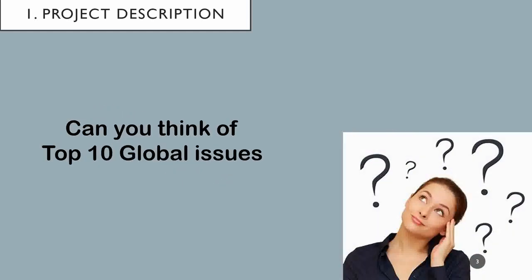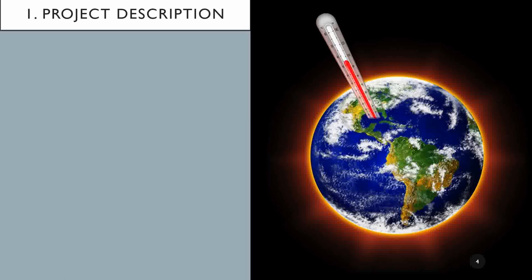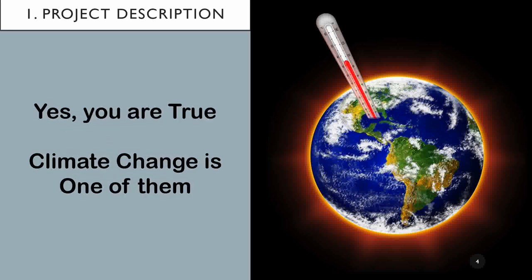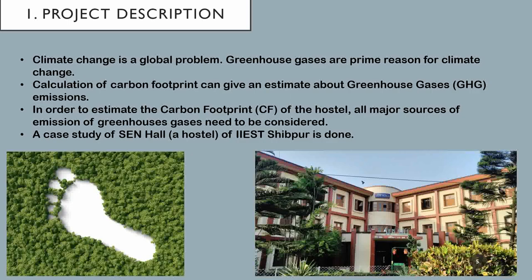Moving forward to the project description, if I ask the top 10 global issues which are prevailing now, this picture might be helpful. Yes, the answer is climate change. Climate change is mainly due to greenhouse gases emission, which is the prime reason. It has a very wide scope, but we say that the ocean is made up of drops of water. So if we just look at very minute parts like managing the carbon footprint of a hostel, it's also a part — that's why this project is important.